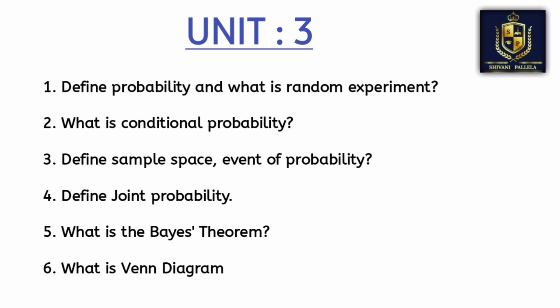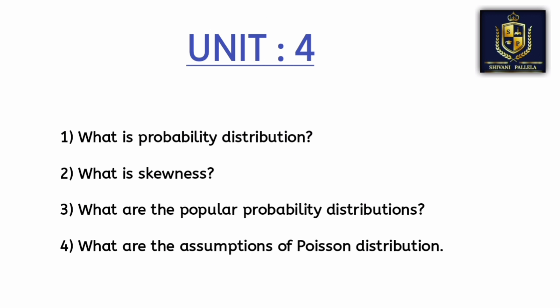From Unit 3, Venn diagram is very important — you have already learned this from 10th class, so you can easily understand it. From Unit 4, skewness is very important, and probability distribution is very, very important. Skewness, Poisson distribution, and probability distribution — you can expect at least one definite question in Part A, and possibly two questions from these.